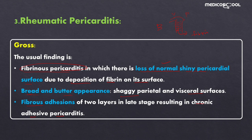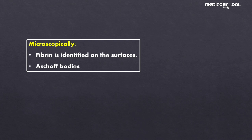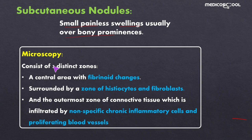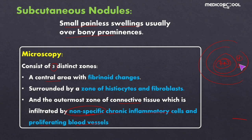Microscopically in rheumatic pericarditis, fibrin is present on the surfaces and Aschoff bodies can be seen in any stage. Subcutaneous nodules are small painless swellings usually on the bony prominences. Microscopically they consist of three distinct zones: a central area with fibrinoid changes, surrounded by a zone of histiocytes and fibroblasts, and an outermost zone of connective tissue infiltrated by non-specific chronic inflammatory cells and proliferating blood vessels.